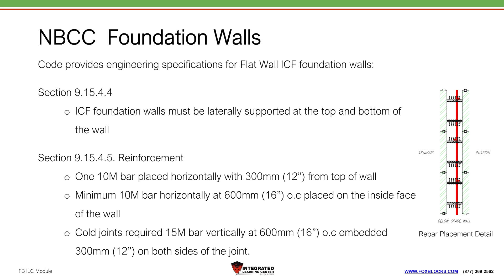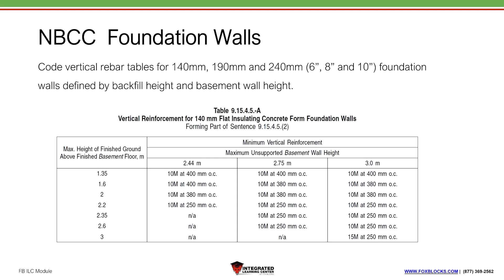Cold joints within a foundation wall — not the joint between the foundation wall and the main floor wall — require 15M bar at 16 inches on center embedded 12 inches on both sides of the joint, giving a very solid connection. The vertical rebar tables in the National Building Code cover 140mm, 190mm, and 240mm walls — basically 6-inch, 8-inch, and 10-inch foundation walls — showing wall heights, backfill heights, and required rebar.